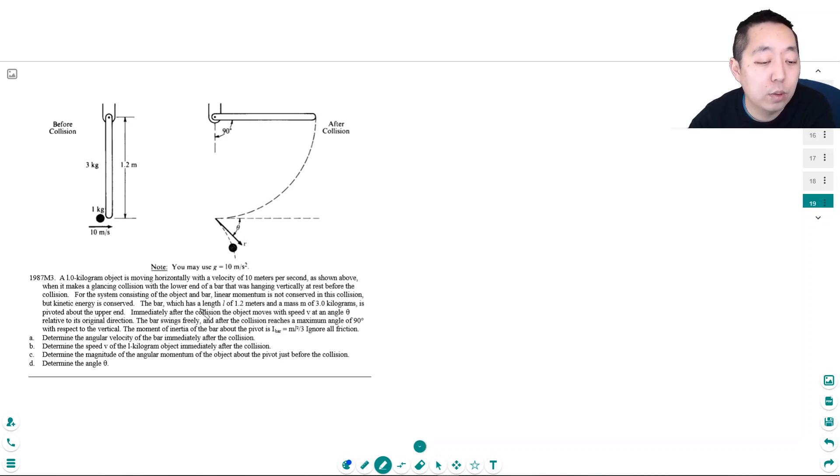The bar which has a length L equals 1.2 meters and a mass of 0.3 kilograms is pivoted about the upper end. Immediately after the collision the object moves to speed V at angle theta relative to its original direction. The bar swings freely and after the collision reaches a maximum angle of 90 degrees with respect to the vertical. The moment of inertia of the bar about the pivot is mL squared over 3 and ignore all friction.